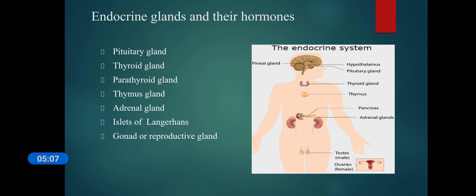The major hormones secreted from the pituitary gland include luteinizing hormone, follicle stimulating hormone, prolactin, growth hormone, thyroid stimulating hormone (TSH), oxytocin, and antidiuretic hormone. These hormones play roles in reproduction, growth, childbirth, breastfeeding, and hormone regulation.